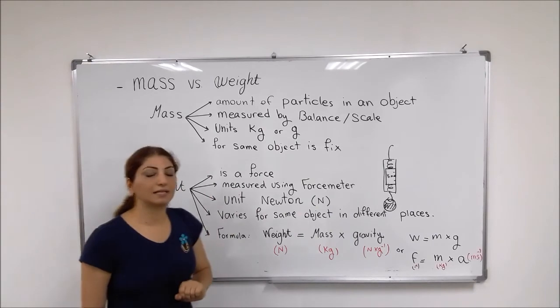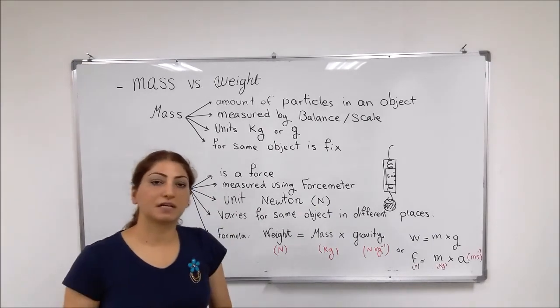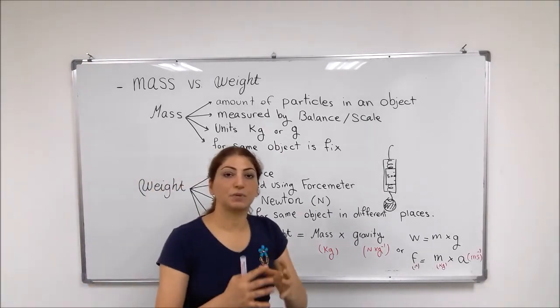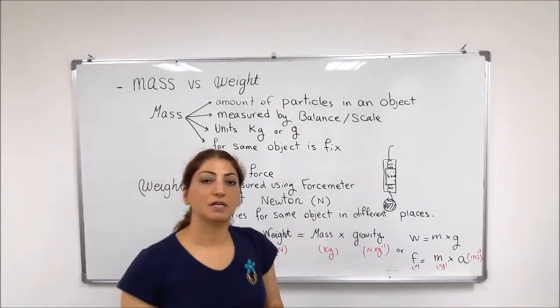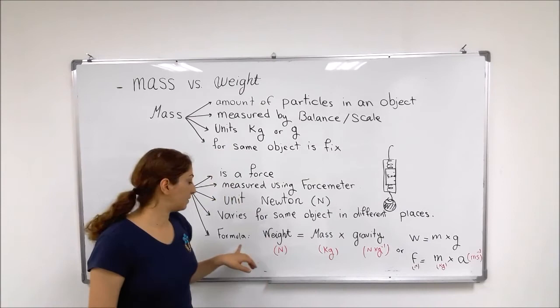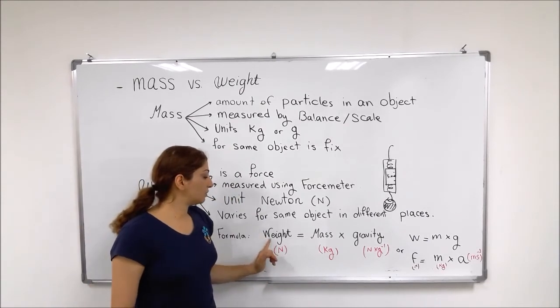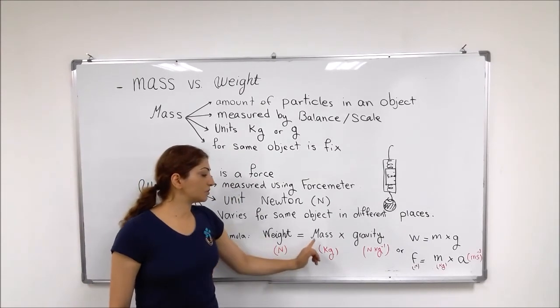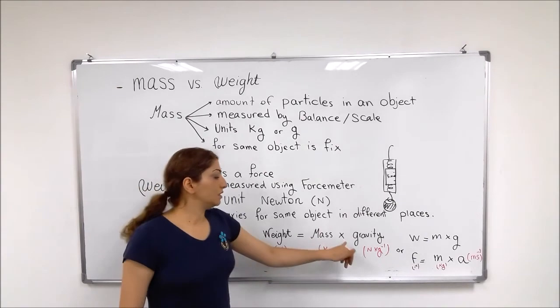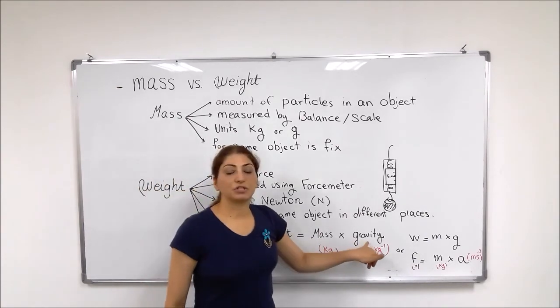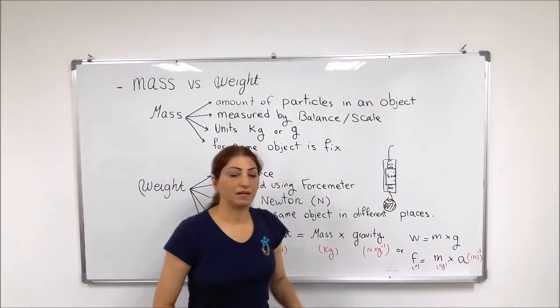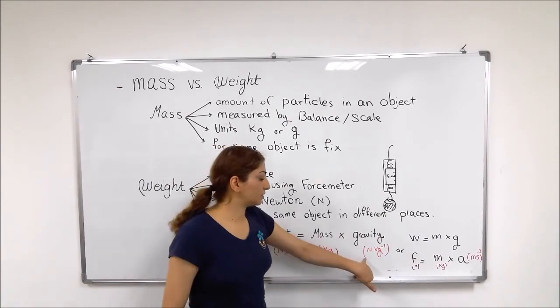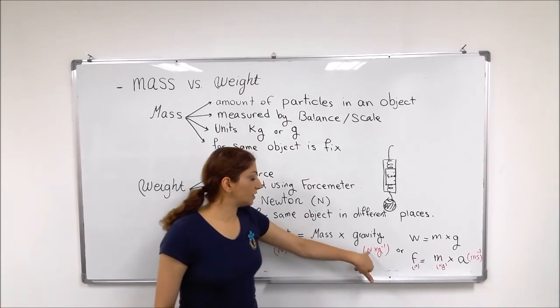And these changes in the weight depends on where the object actually is placed on. You can use this formula. So weight in Newton equals to mass in kg, times gravity, gravitational field of that place. It can be Mars, it can be earth, that you are actually standing on and you measure your weight on it.